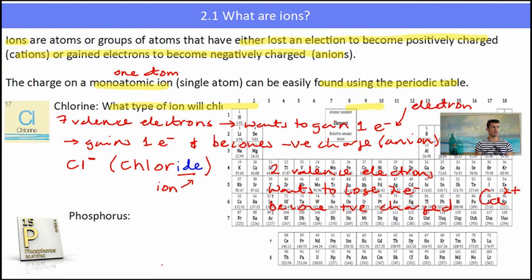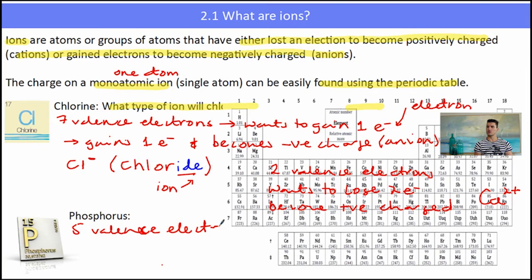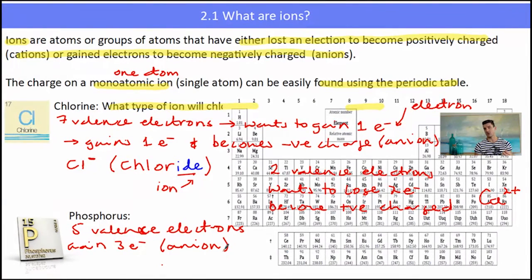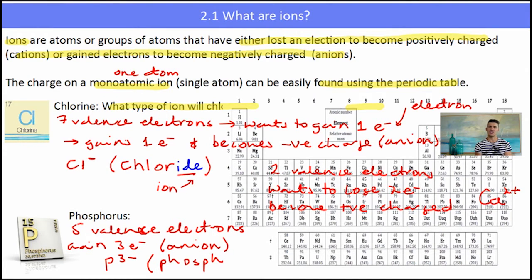Phosphorus — number 15 on the periodic table — is in group 15, which means it has 5 electrons in its outer shell, so 5 valence electrons. Phosphorus could either lose 5 electrons or gain 3 electrons. The easiest is to gain 3. So phosphorus, a non-metal, gains 3 electrons and becomes an anion. Gaining 3 electrons means it has a 3 minus charge. And its name, because it's a non-metal, will change — it will be called phosphide, changing the last part of the name to '-ide'.